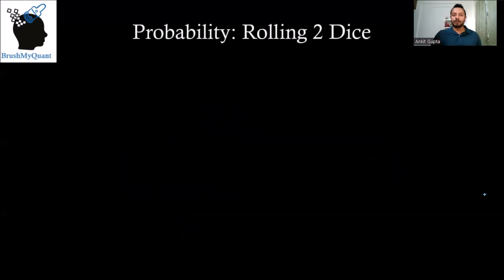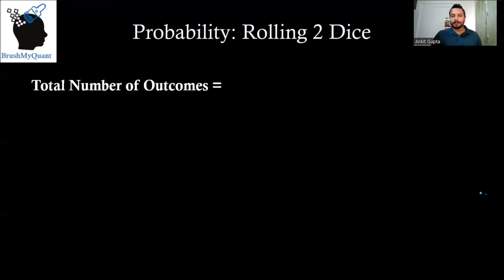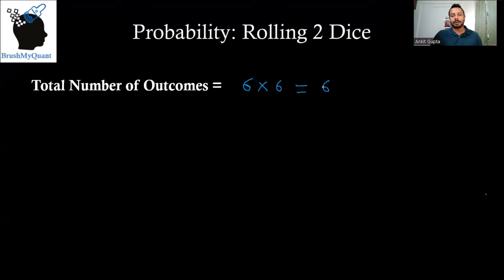Now let's see how to deal with problems where we are rolling two dice instead of one. In the first die, we can get any number from one to six, so the total outcomes are six. Similarly, for each of those six outcomes, in the second die we can also get any of those six numbers. So the total outcomes are six raised to two, or 36. In general, if you are rolling n dice, the total number of outcomes is six raised to n.